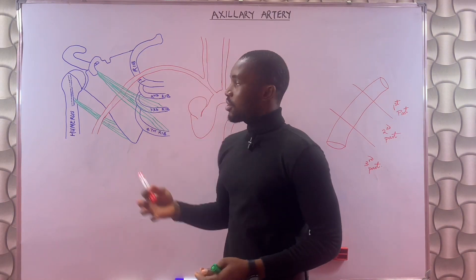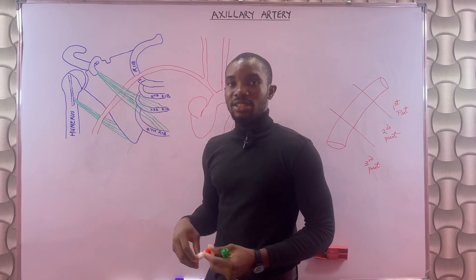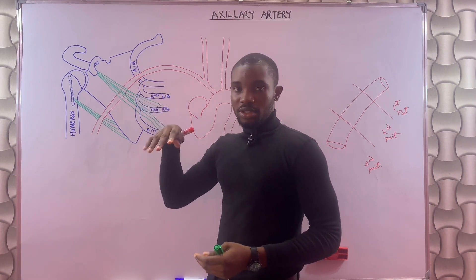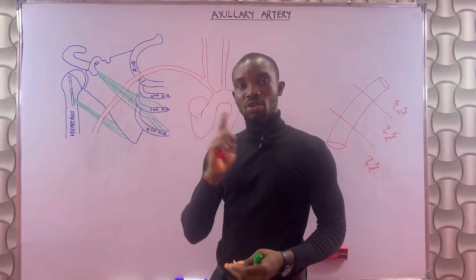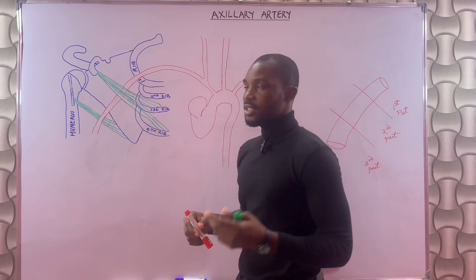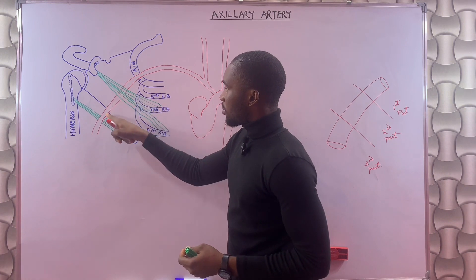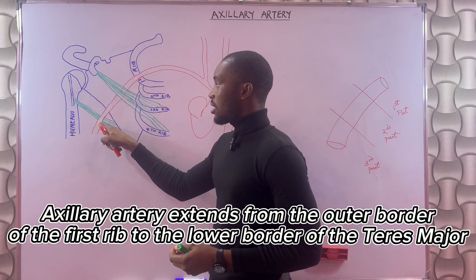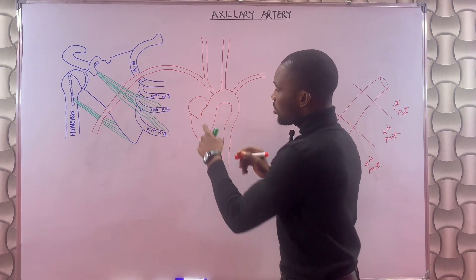We discussed that the axilla begins at the outer border of the first rib — that's the apex, the topmost part of the axilla, and that's where the axillary artery begins. The axillary artery extends from the outer border of the first rib to the lower border of the teres major.